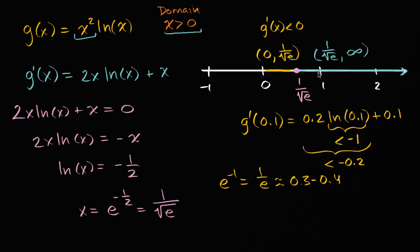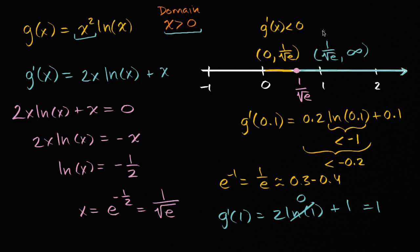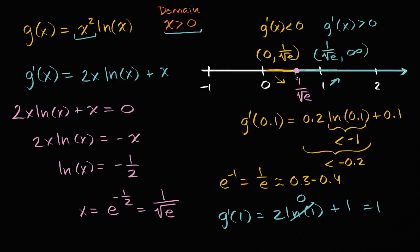So our function is decreasing from zero to one over the square root of e, and then increasing for all x greater than one over the square root of e. Since we're decreasing into that critical point and then increasing after it, we're hitting a global — or absolute — minimum point at x equals one over the square root of e.